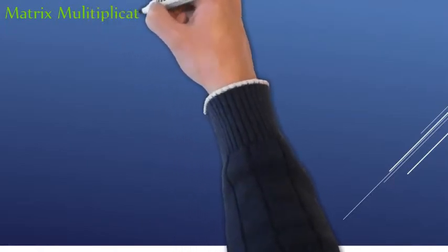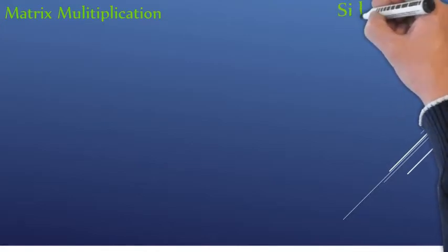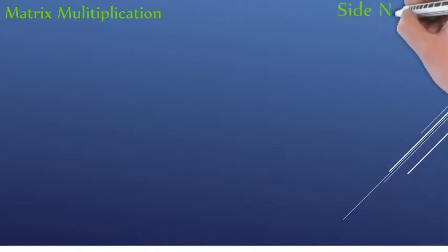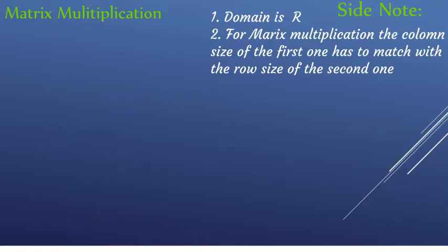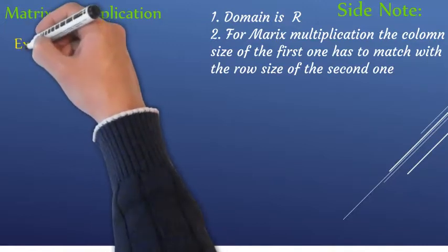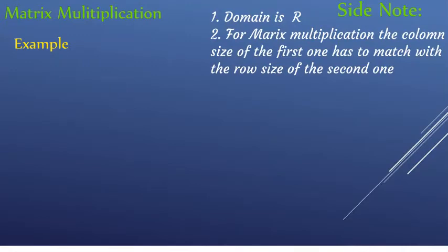In this next section, we will cover one more example of matrix multiplication, and also introduce something called the identity matrix. For instance, in regular multiplication: three times one is three, four times one is four, five times one is five. Whenever you multiply by one, you get the same result. We have the same concept in matrices — for every square matrix, we have an identity matrix.